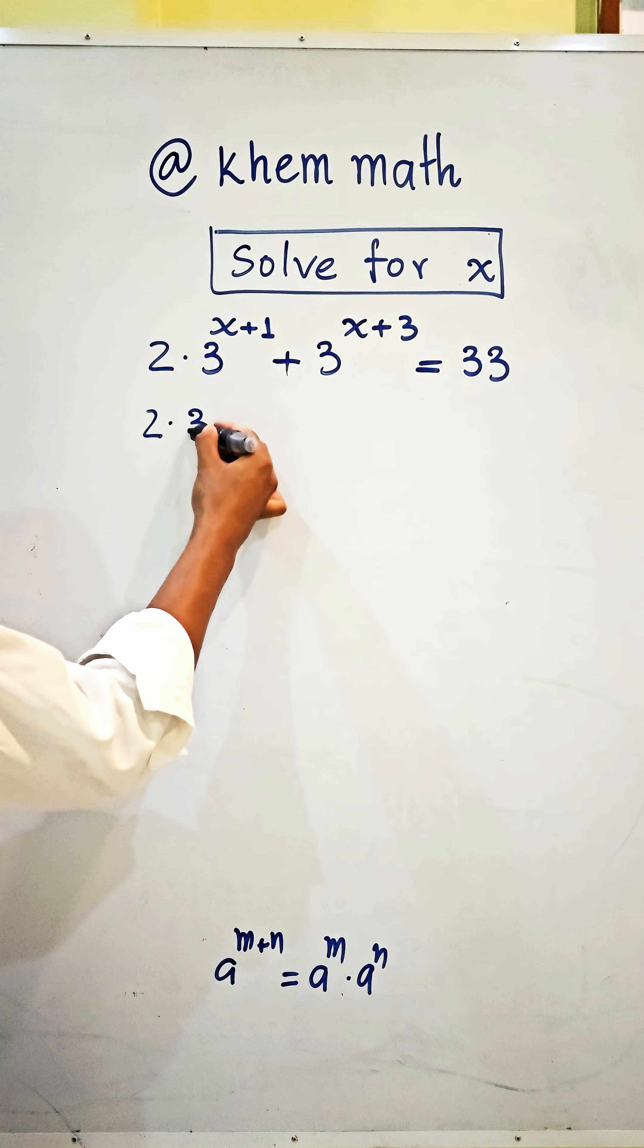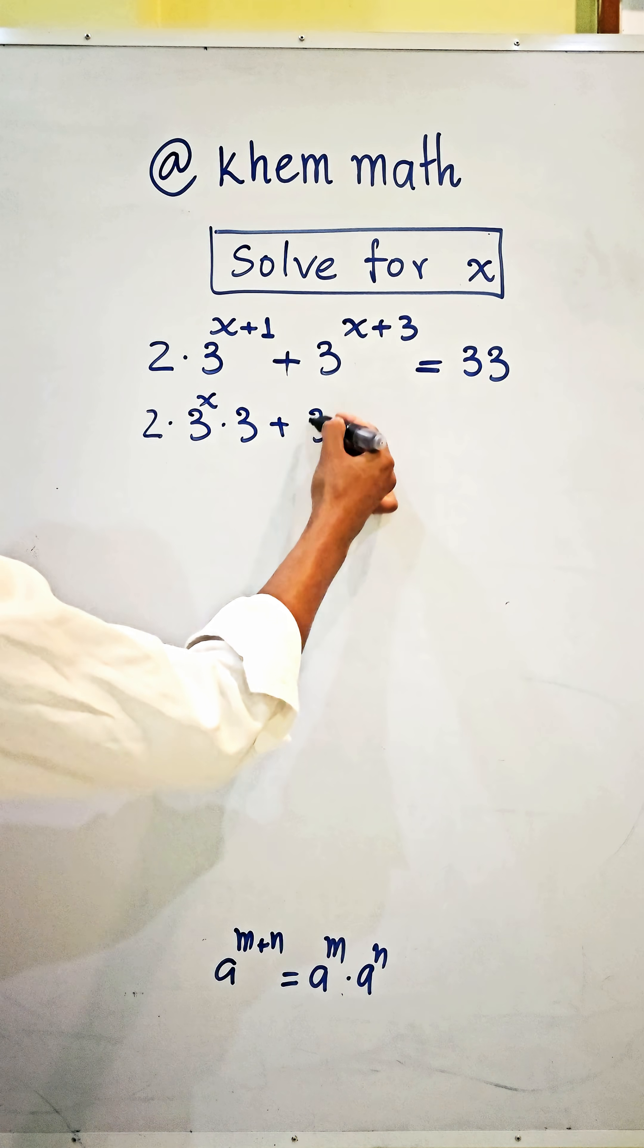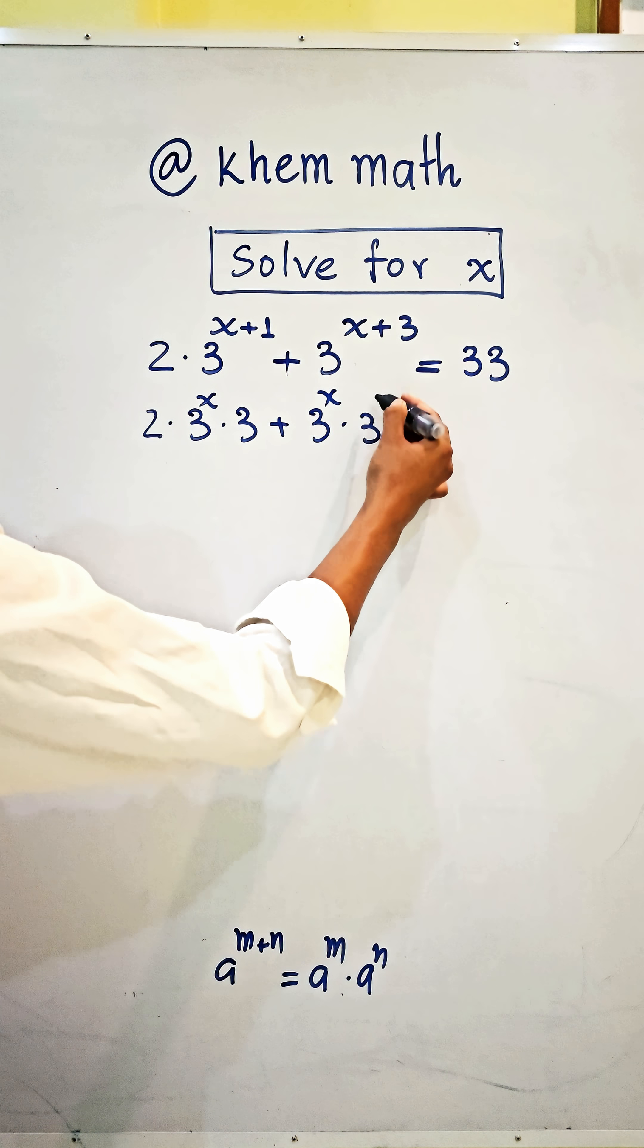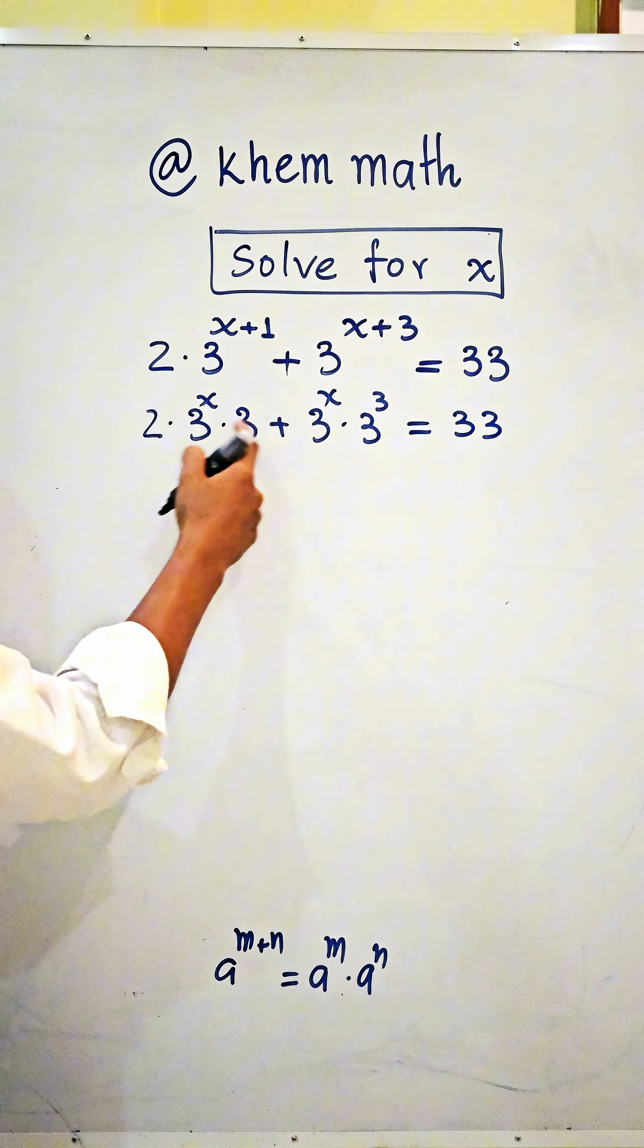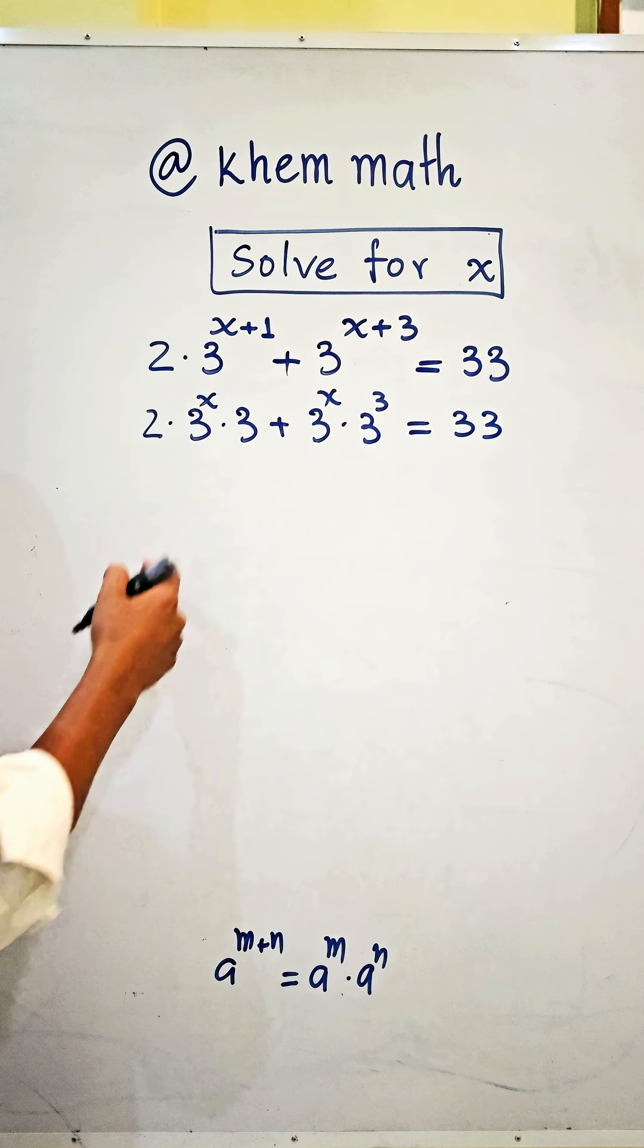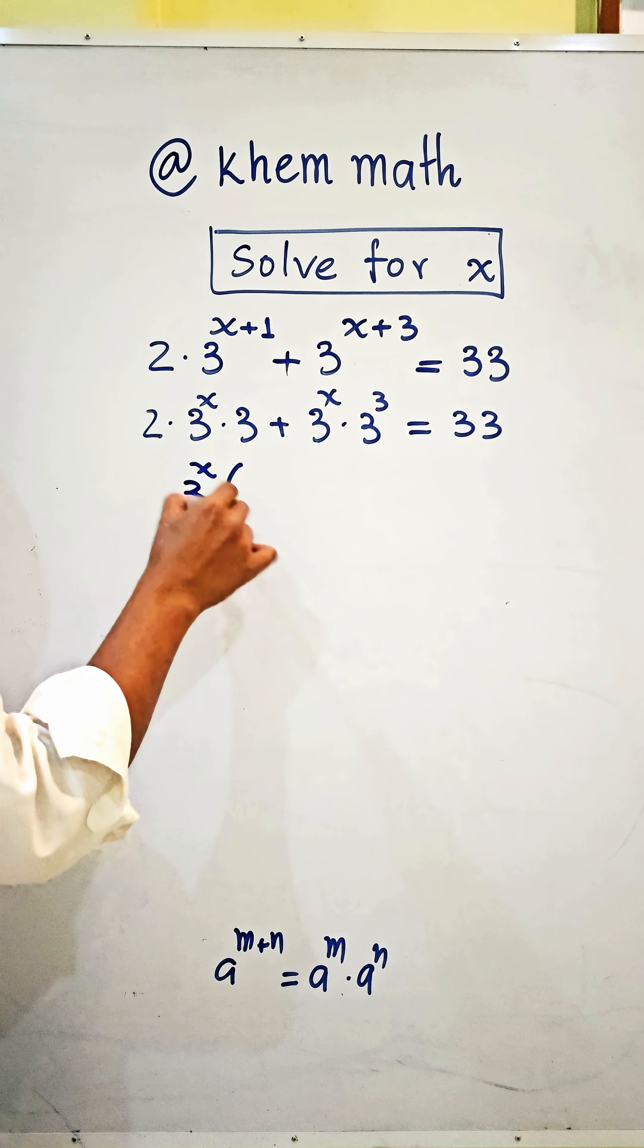2 times 3 power x times 3, plus 3 power x times 3 power 3 equals 33. Here we take 3 power x as a common factor, we get 3 power x times 2.